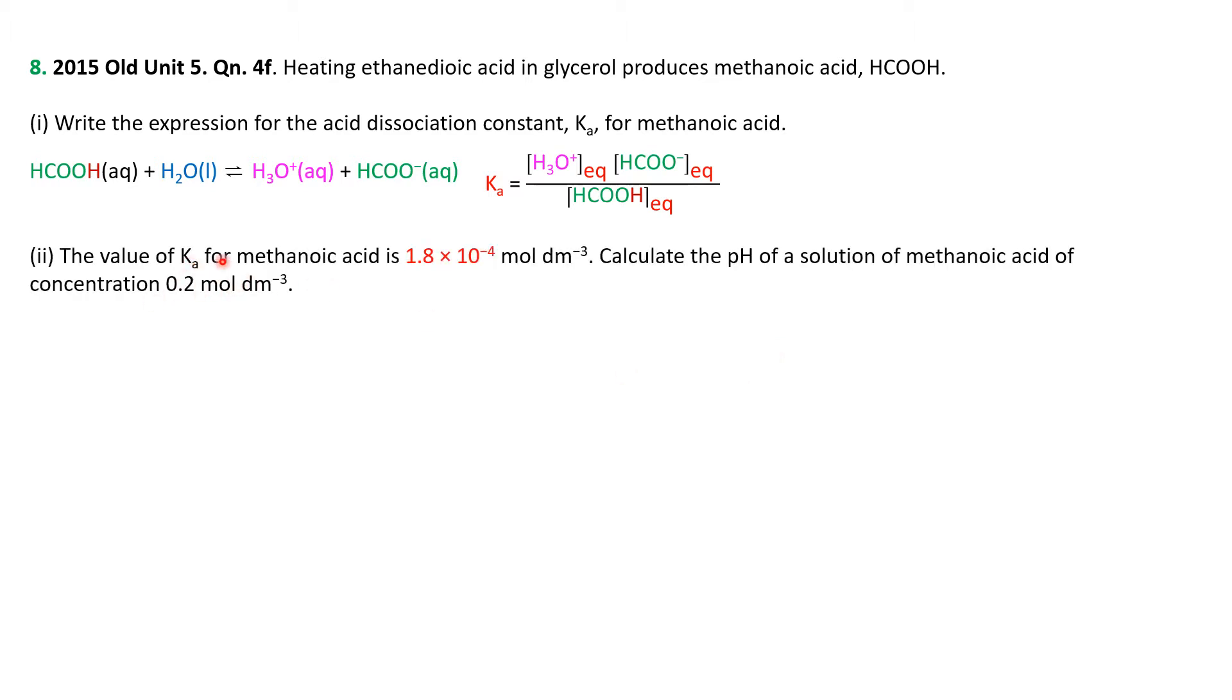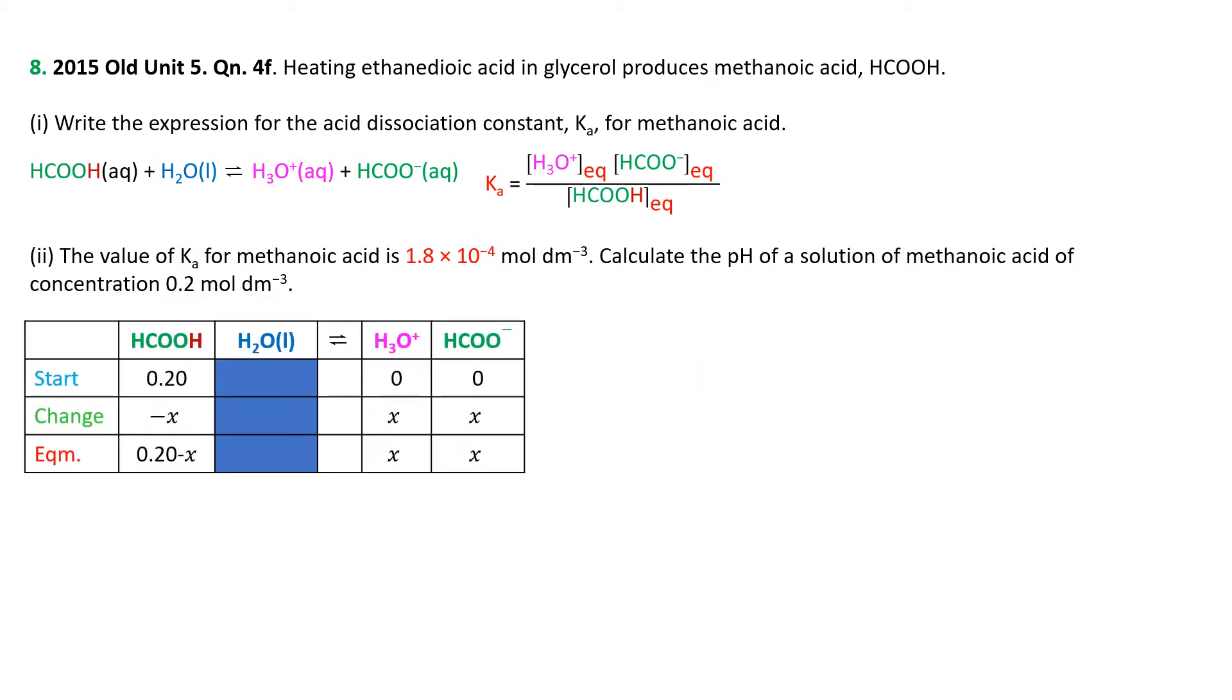Calculation now: the value of Ka for methanoic acid is 1.8 times 10 to the minus 4. Calculate pH of a solution of methanoic acid concentration 0.2. We did a similar calculation earlier. Here's our score chart, 0.2 for the HCOOH. None of that, none of that.